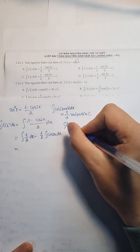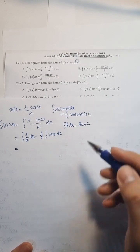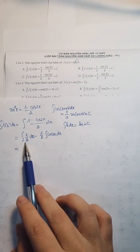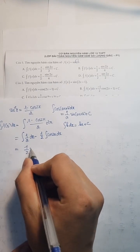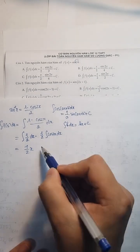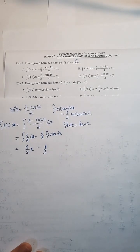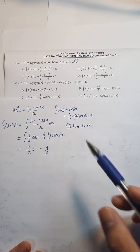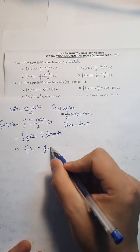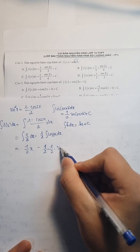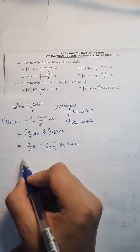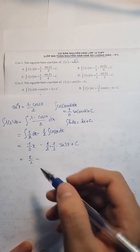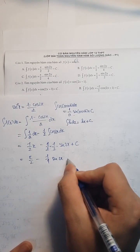Nguyên hàm của k dx thì nó bằng kx cộng C. Thì k ở đây là 1/2. Các bạn là bằng 1/2 x. Trừ 1/2, thì áp dụng vào thì là 1 trên a. A bằng 2 đúng không? Thì là 1/2 nhân với sin(2x). Cộng với C. Tức là bằng x/2 trừ 1/4 sin(2x) cộng với C. Đáp án chính xác là C nhá.